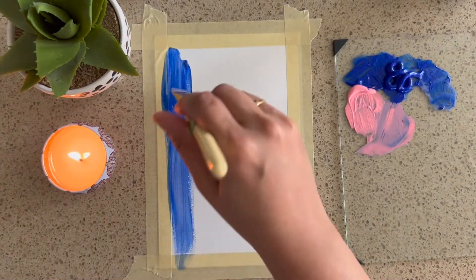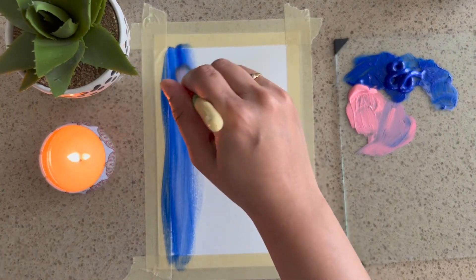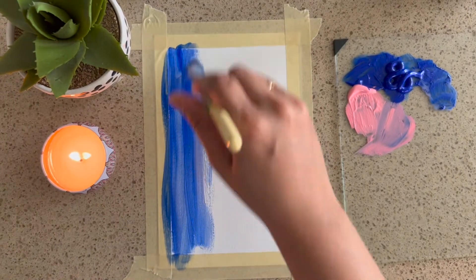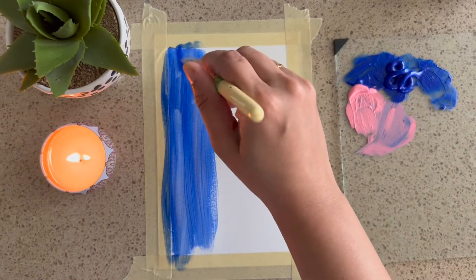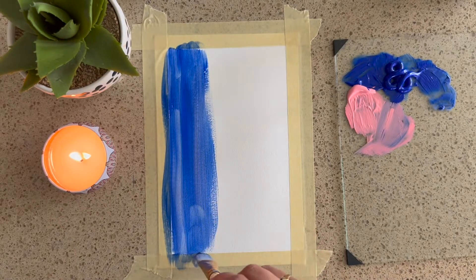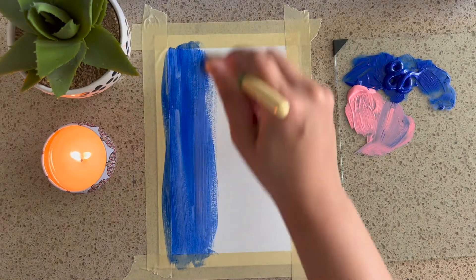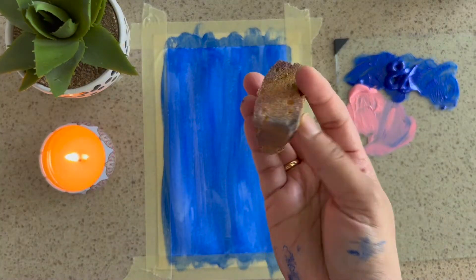For this technique, I won't be using any brush. So first I want to make sure that the color is on all the surface and the white part doesn't show through. Once I am done, I'll be using a sponge.